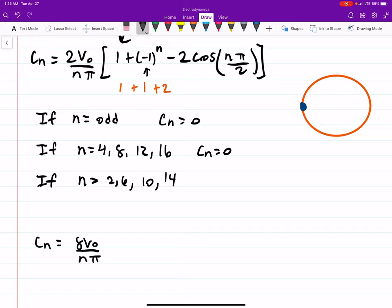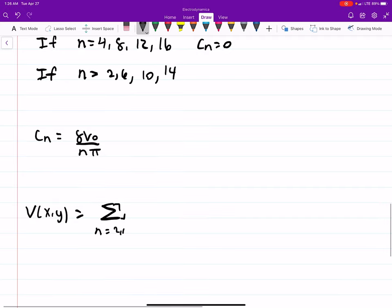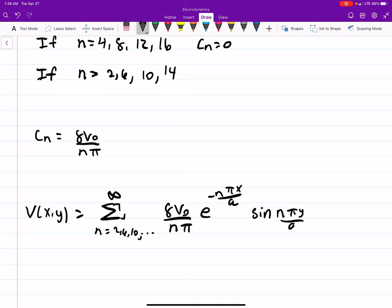I think they wanted the potential, so to find the potential, V of the function of x, y is equal to the sum, n equals 2, 6, 10, so it's an infinite sum, or series, I should say. c_n we said was 8V₀ over nπ, e to the minus nπx over a, sine of nπy over a.